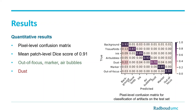To evaluate the performance of the artifact segmentation module, we computed the pixel-level classification matrix using the test set. Our method achieved an average patch-level Dice score of 0.91. For both pixel-level classification and patch-level evaluation, the performance on out-of-focus, marker, and air bubbles was the best.